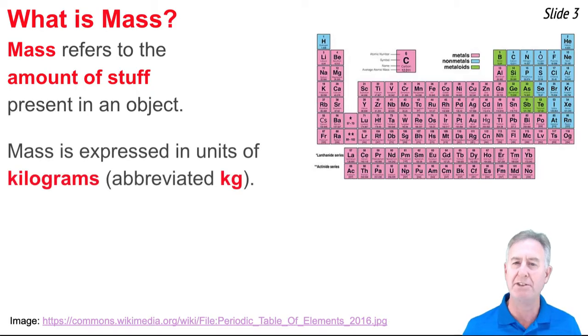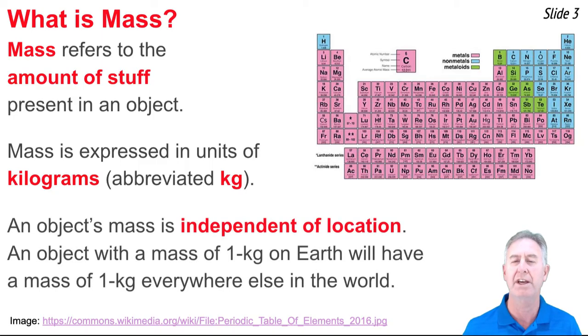When we're done, we get the mass of an object and the standard metric unit for that mass would be the kilogram, abbreviated kg. When it comes to mass, here's the important thing: It's independent of the location of that object. So if you had a one kilogram object, the mass of that object would be one kilogram everywhere.